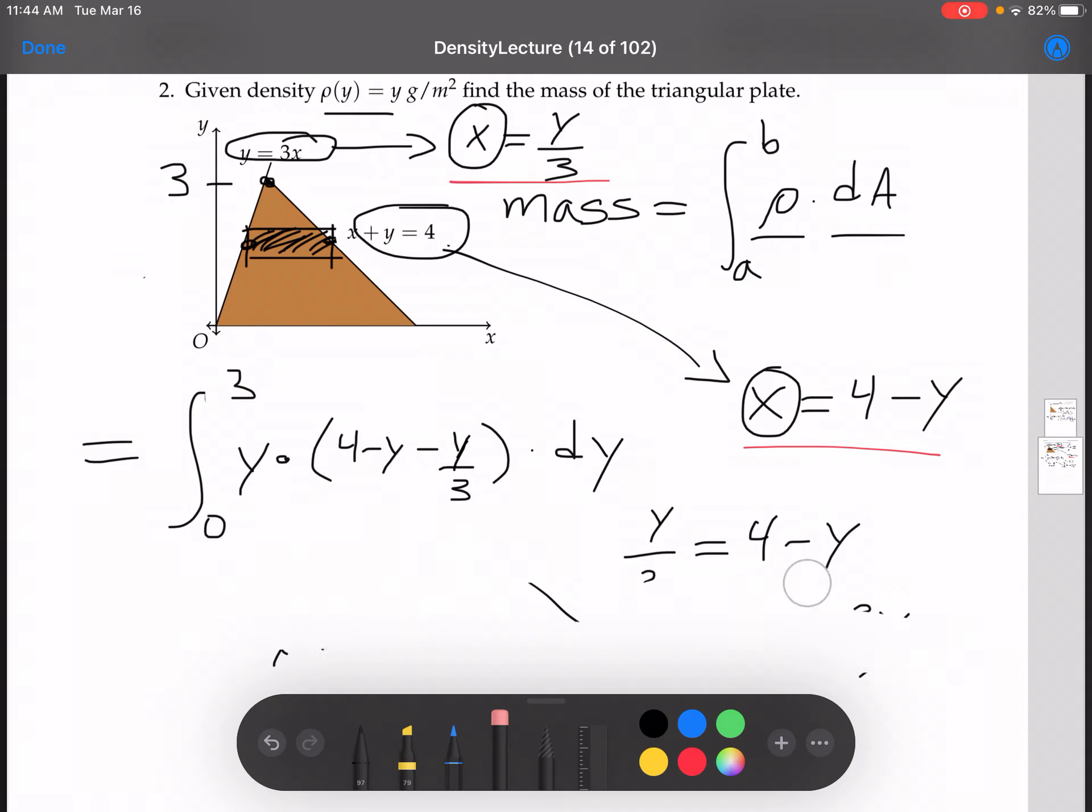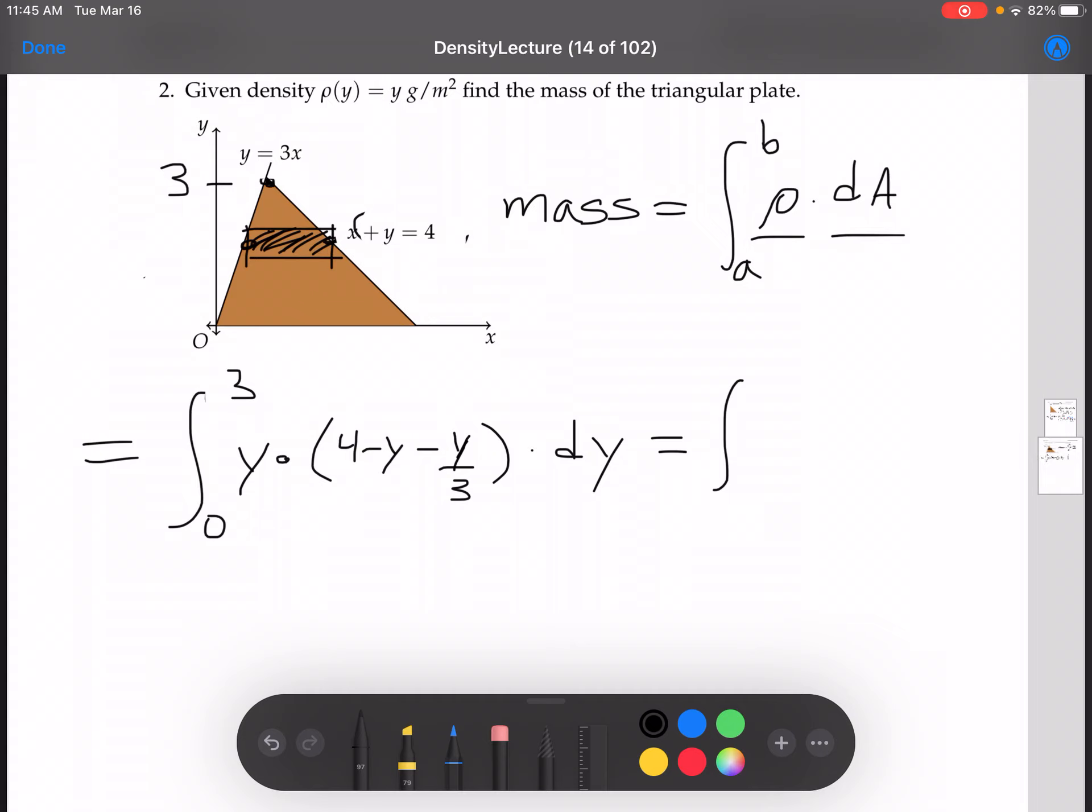Now let me clean things up a bit. Let's compute this integral. First, combining like terms in the parentheses. We have negative y minus a third y, so combining like terms, that's negative 4 thirds y. So we have y times 4 minus 4 thirds y dy.